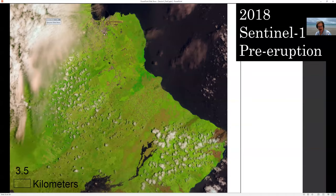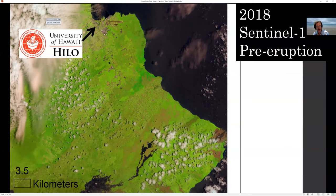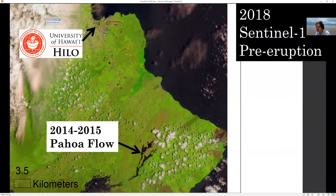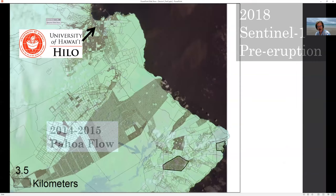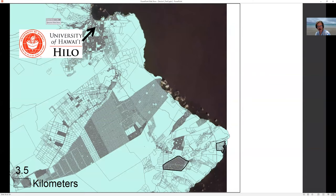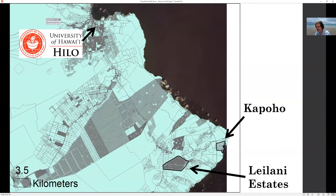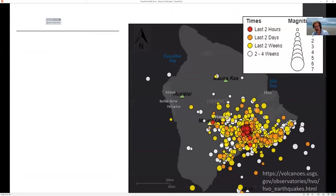Let's fast-forward to 2018. This is a satellite image of East Hawaii — Hilo is up here in the north bay, where I'm sitting right now. We've got the 2014–2015 Pahoa flow outline shown, along with outlines of communities and properties — two highlighted here: Kapoho and Leilani Estates. Yes, that's a Sentinel image, not a drone image.